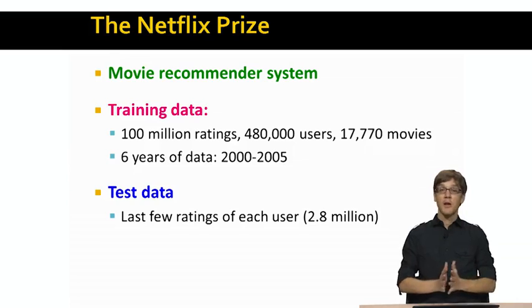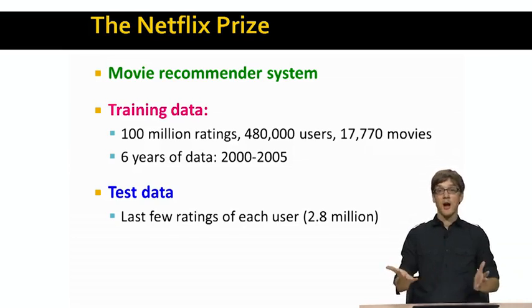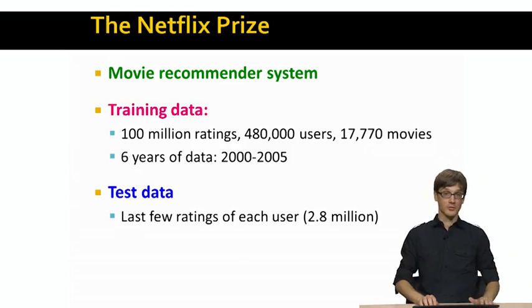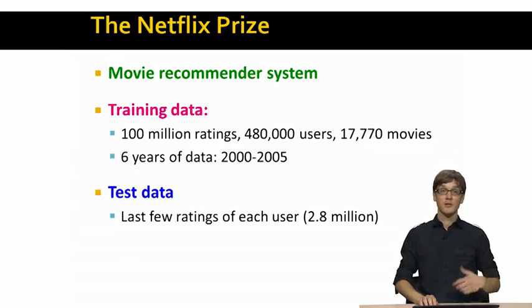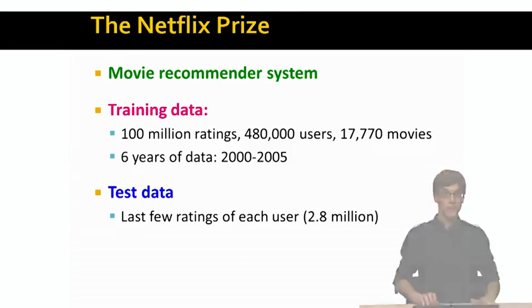The goal is to make sure that the predicted ratings correspond to the actual true ratings of the people who liked those movies. So basically, we are given 100 million movie ratings and we want to build a recommender system out of this.